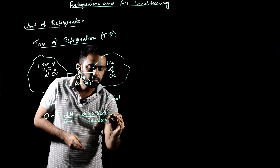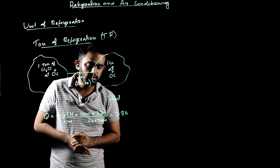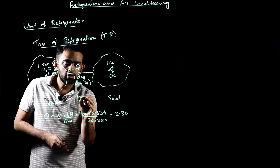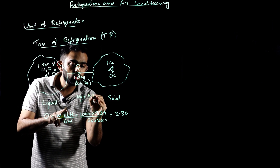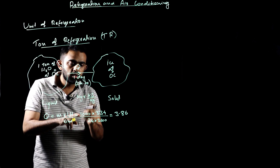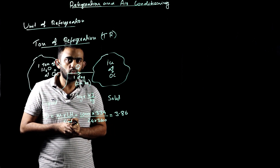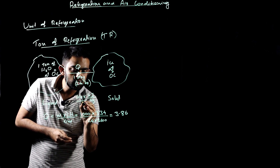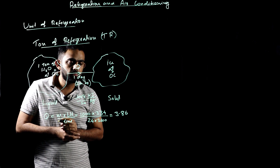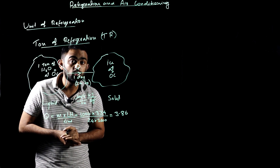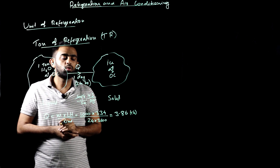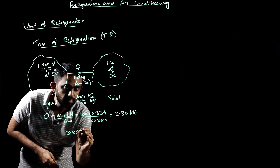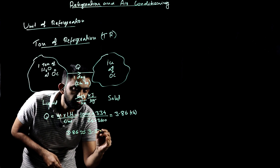Calculating: 1,000 kilograms multiplied by 334 kilojoules per kilogram, divided by (24 × 3,600) seconds. The kilogram units cancel out. The remaining unit is kilojoules per second, which is kilowatts. This gives us approximately 3.86 kilowatts, which we round to 3.5 kilowatts.